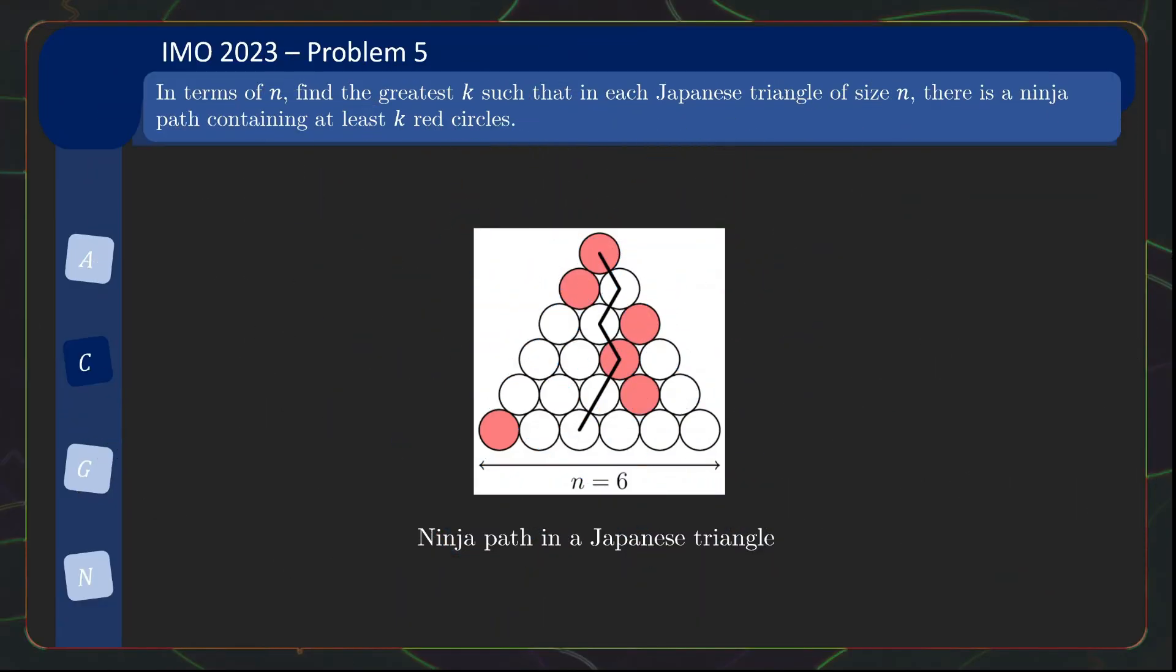And coming in 1st place, for me this is none other than the only combinatorics problem from this year's International Math Olympiad. This problem creates a very unique setting of Japanese triangles and ninja paths.